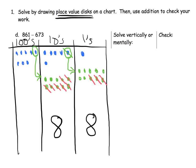In the hundreds column, since we unbundled one hundred, we now have seven hundreds. We take away six hundreds — crossing off six — leaving one in the hundreds column. So our answer is 188.